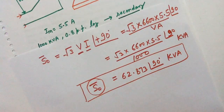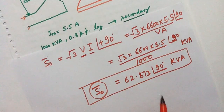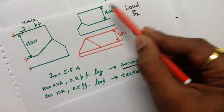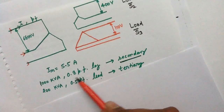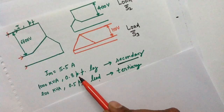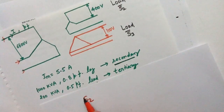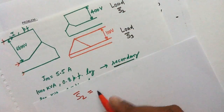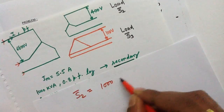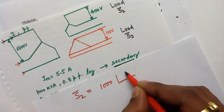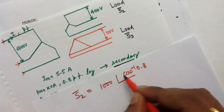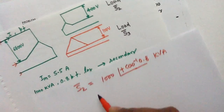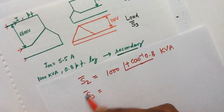S0 = 62.873∠90° kVA is the complex power needed to magnetize the core. For S2: there is a 1000 kVA load on the secondary at 0.8 lagging power factor. So S2 = 1000∠(+cos⁻¹ 0.8) kVA, using a positive sign due to the lagging nature of the power factor.